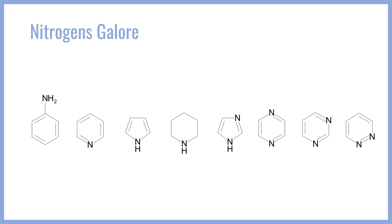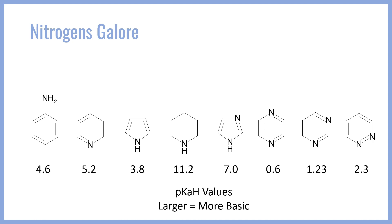Shown below are the several nitrogen compounds that we're going to be looking at. There's a wide variety of them including several pentagon and hexagon geometries with one and two nitrogens in the ring. Some include double bonds while some of the nitrogens are only single bonded. I'm also going to provide the pKaH values — the pKa values of the conjugate acid — below. These values are read such that the larger the value, the more basic the molecule is, because the larger the pKaH value, the less acidic the conjugate acid, and therefore the more basic the original molecule. The most basic here is the piperidine ring, while the least basic is the molecule at the other end.